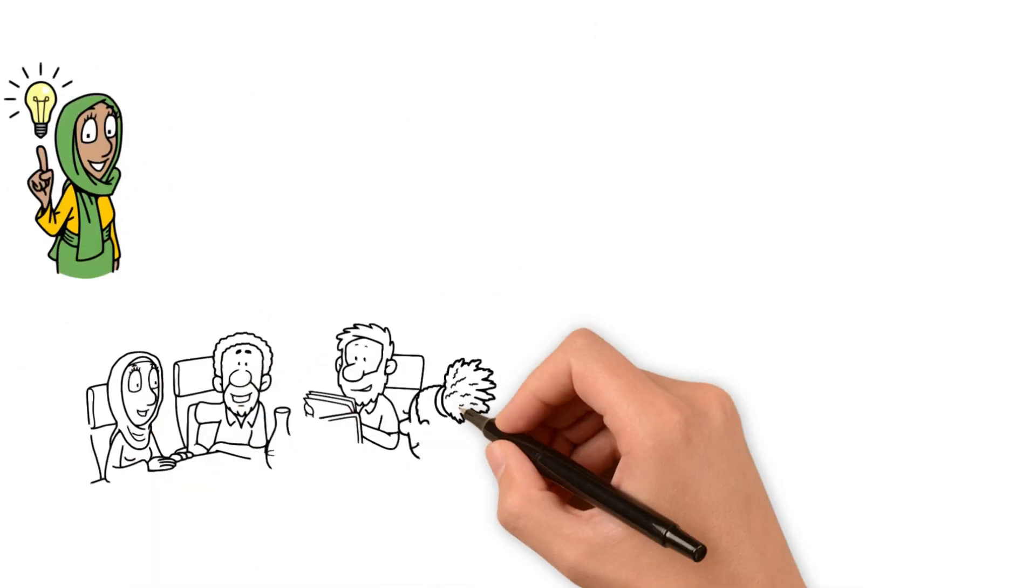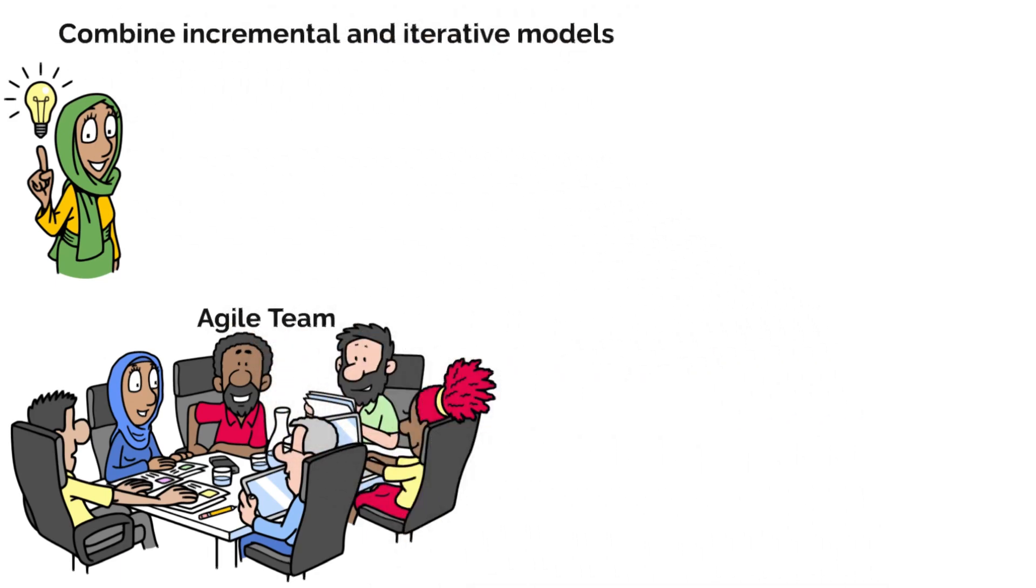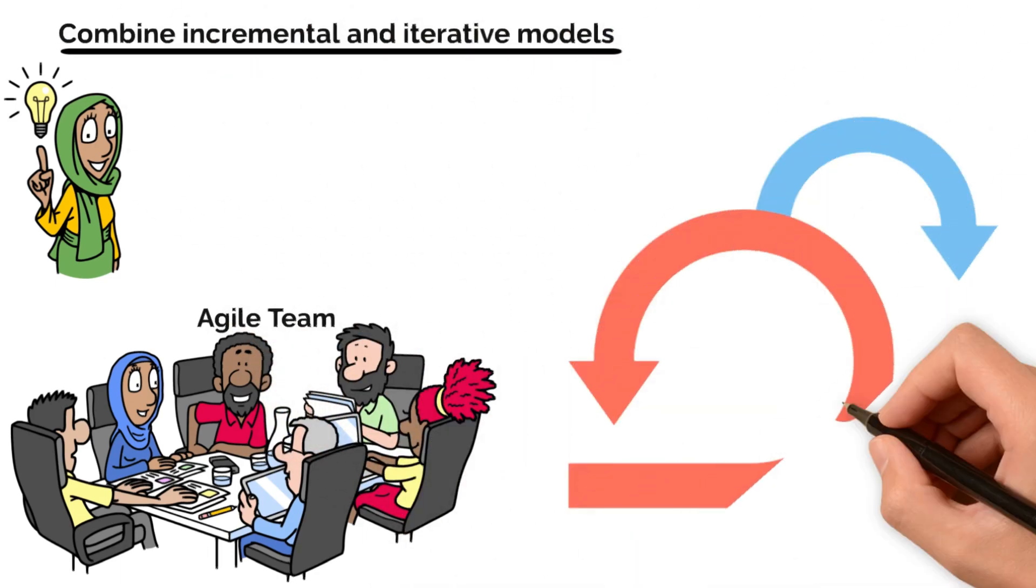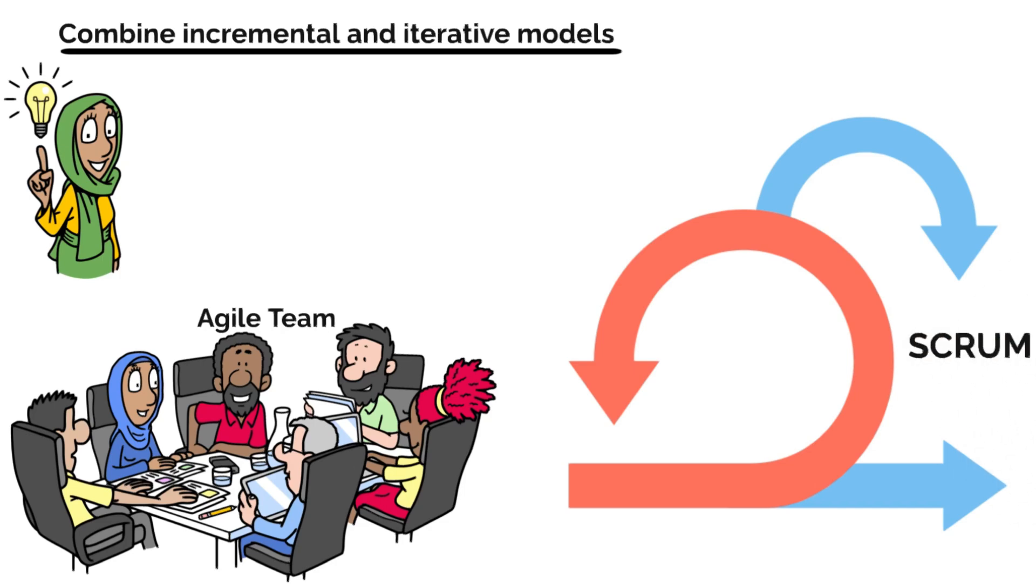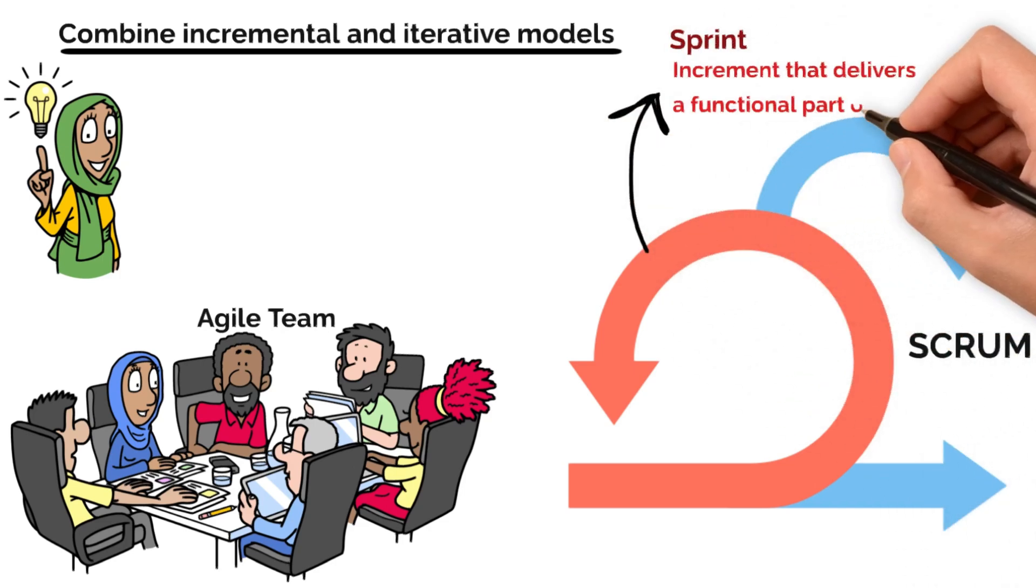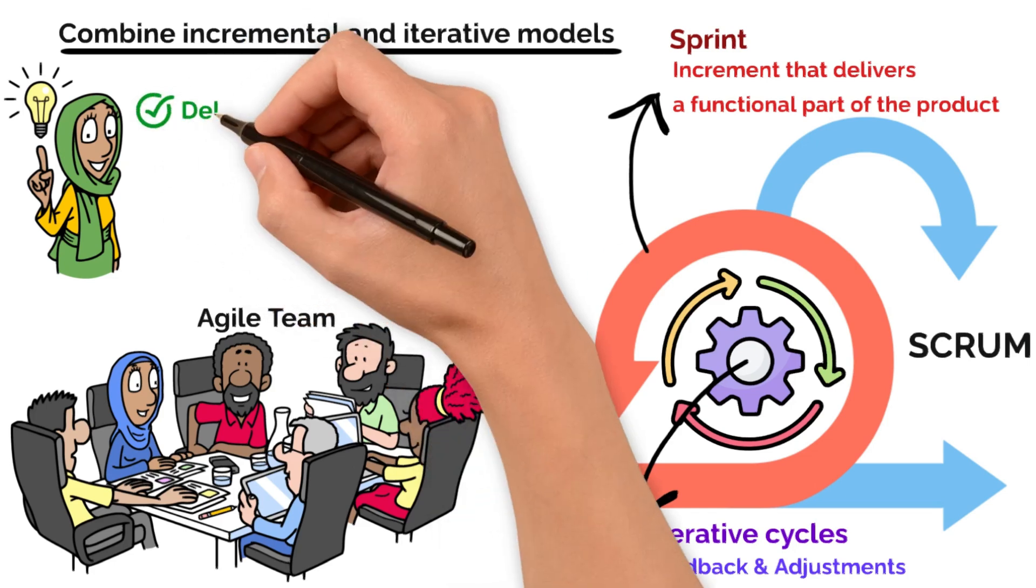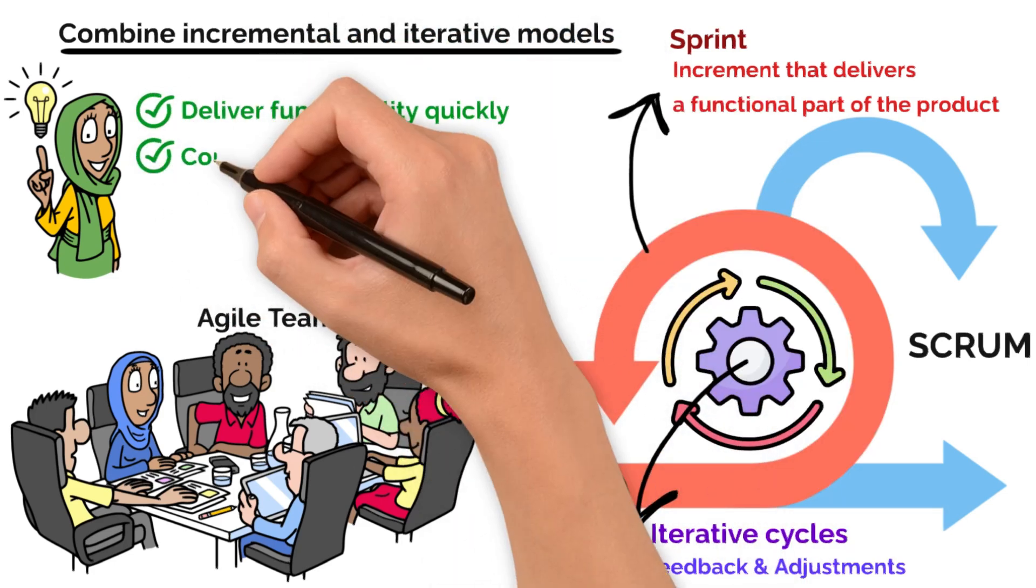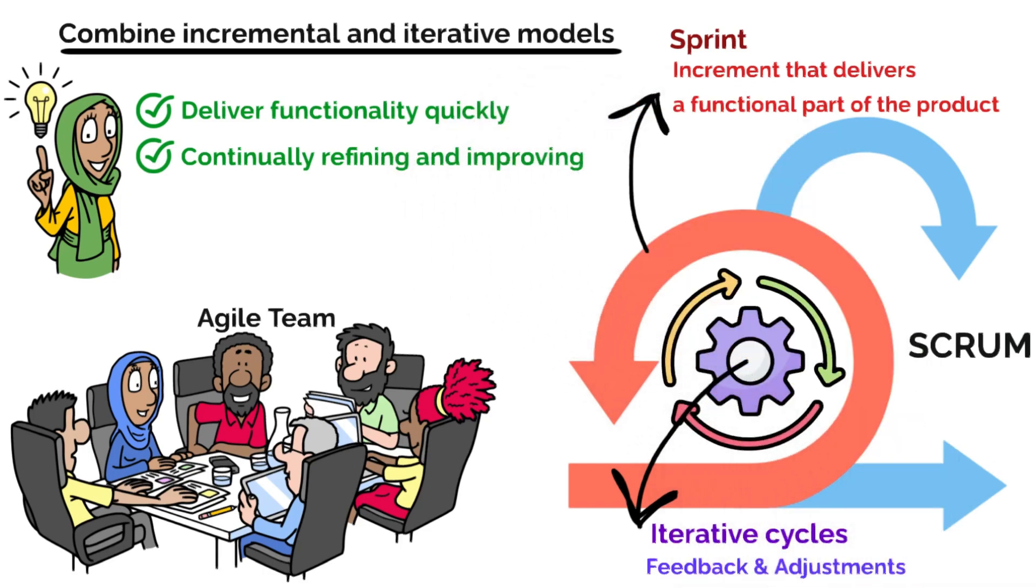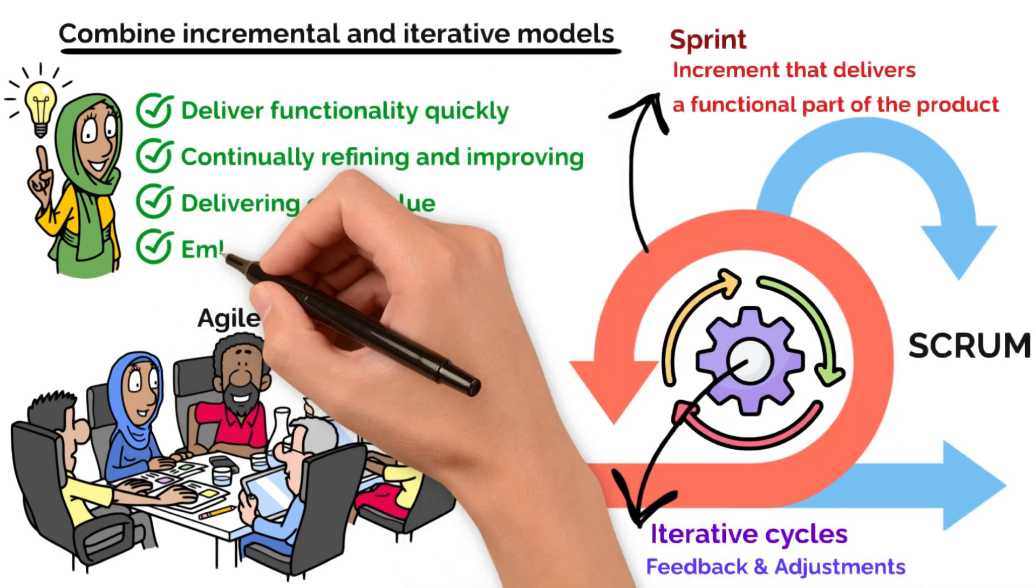Here's where things get really interesting. Many agile teams use a combination of both incremental and iterative approaches, and it's actually a great way to get the best of both worlds. Think about Scrum. Each sprint can be seen as an increment that delivers a functional part of the product. At the same time, each sprint includes iterative cycles where feedback is incorporated and adjustments are made. This combined model allows teams to deliver something functional quickly while also continually refining and improving the product as they go. It's the perfect balance between delivering early value and embracing ongoing feedback.